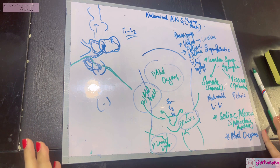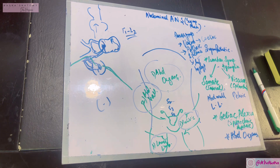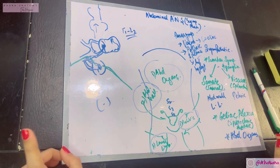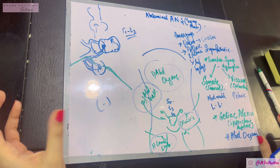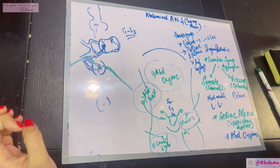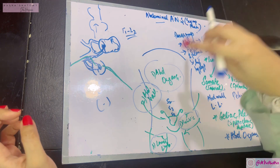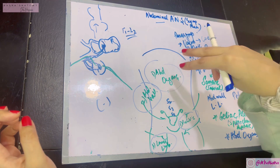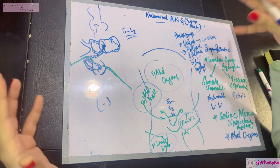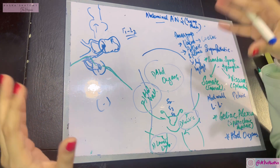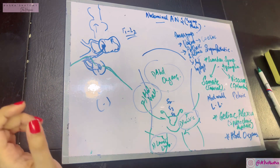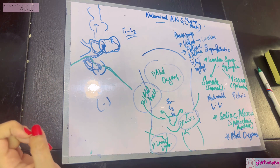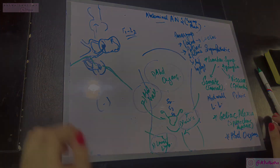That was a basic introduction to the abdominal autonomic nervous system. In the next video, I will talk about the individual units of this autonomic nervous system — mostly the abdominal part — which means the lumbar sympathetic chain, the celiac ganglion, and celiac plexus, and I will explain that concept very elaborately to make sure it becomes simple for you. Thank you so much for watching — see you in the next video.